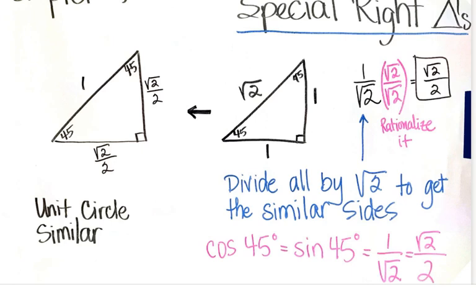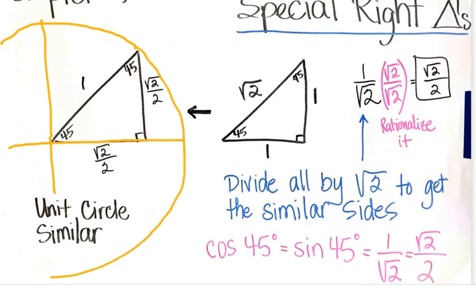And so it would look like this. Right here would be my x and my y, and this would be my radius, a radius of 1. It would be like that. There's where our unit circle similarity comes. So this point is 1, 0.